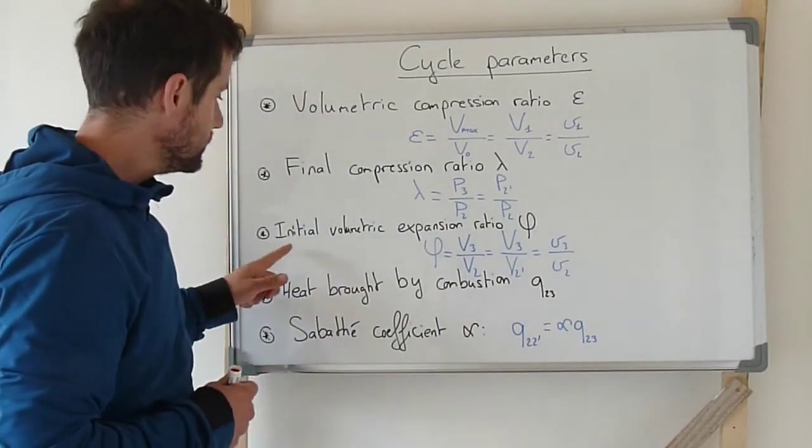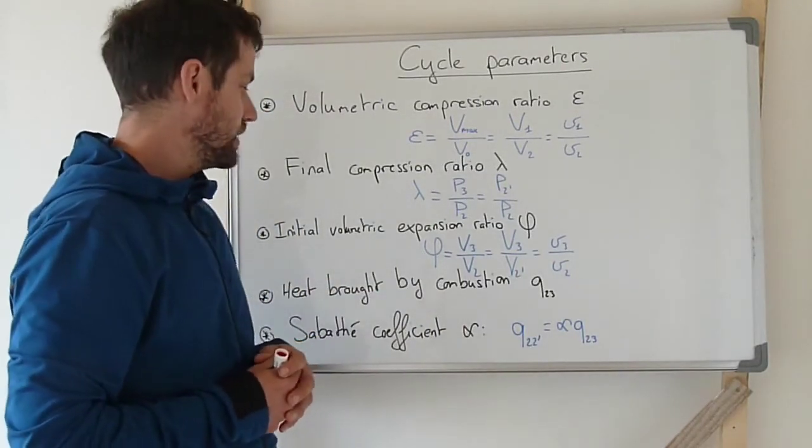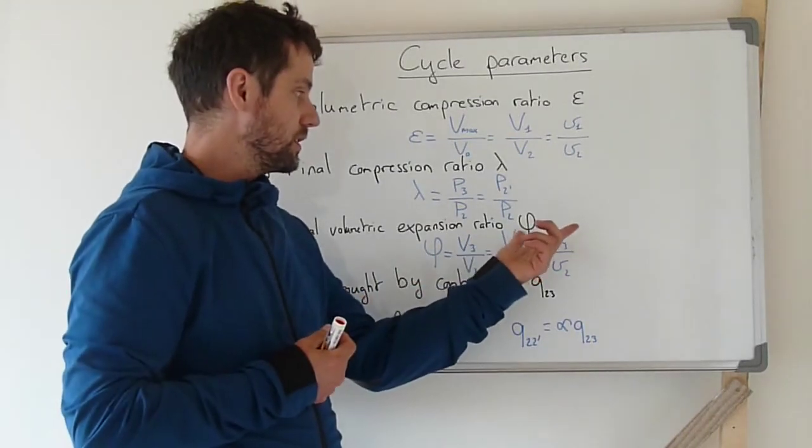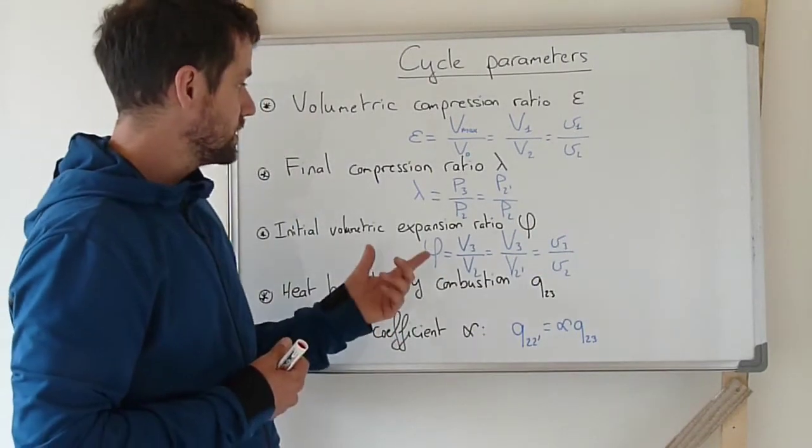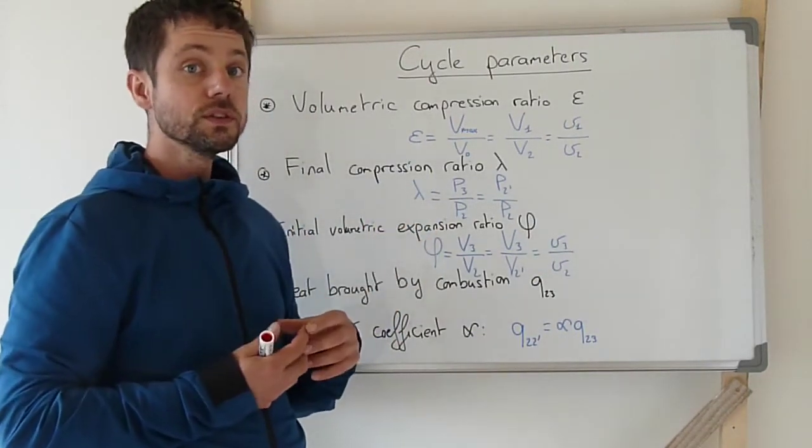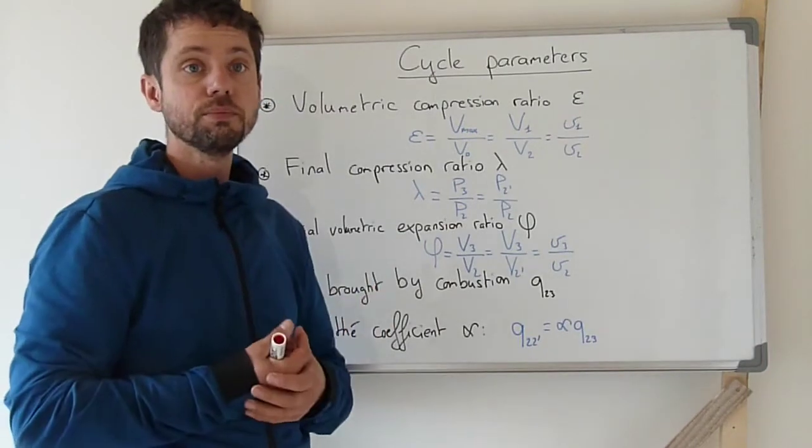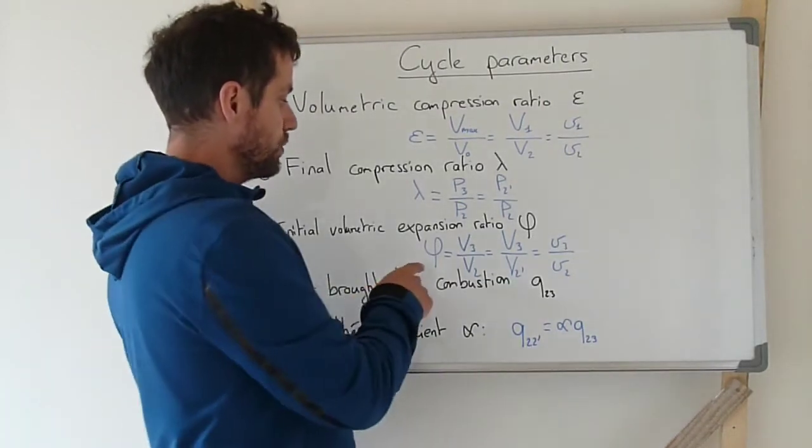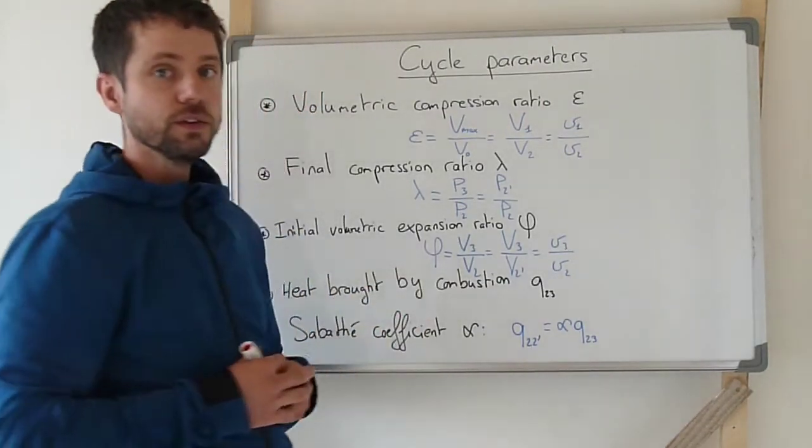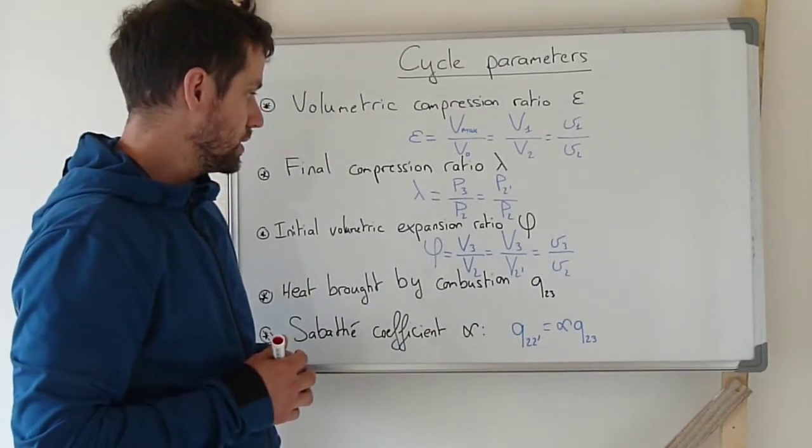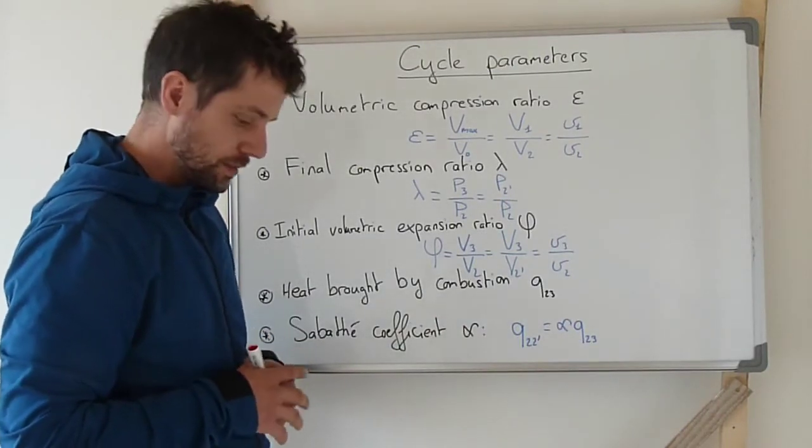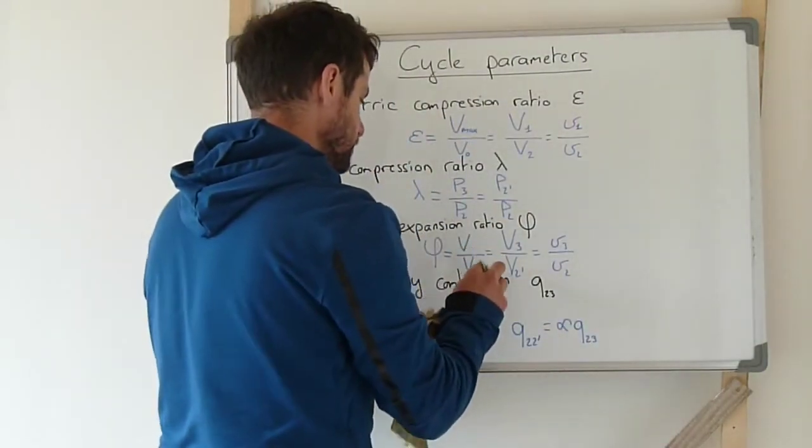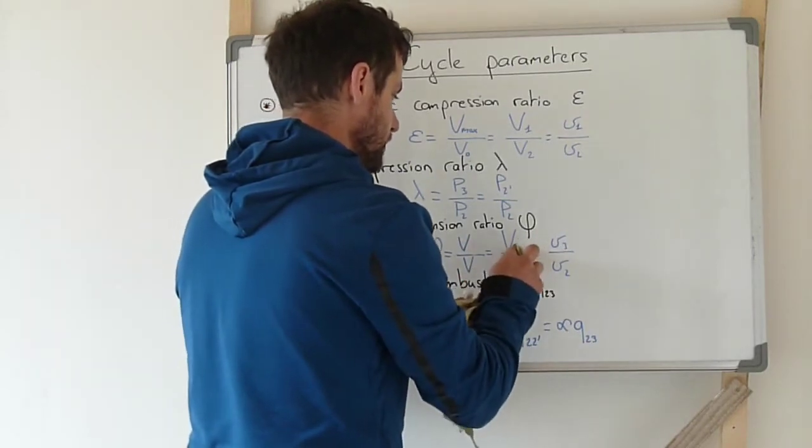Then, another parameter is called the initial volumetric expansion ratio. This parameter, like the one before, is used to describe what's taking place around combustion and during combustion. And it's written with phi (φ). It's the ratio of volume—oh, I made a mistake here—it's the ratio of volumes that we have during the combustion.